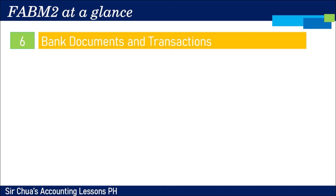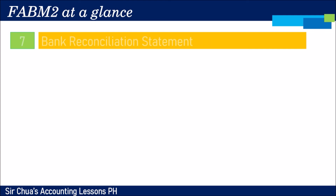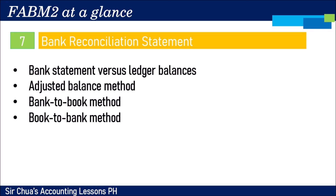You will also be introduced to bank documents and transactions. Companies keep their cash in the bank, so it's important to understand bank transactions. We will cover different types of bank accounts, bank transactions, deposits and withdrawal slips, how to prepare checks, parts of a check, and how to read information in a bank statement. Since companies also maintain their own records, we will cover bank reconciliation statement — reconciling the bank balance with the ledger balance — including the adjusted balance method, bank to book method, and book to bank method.